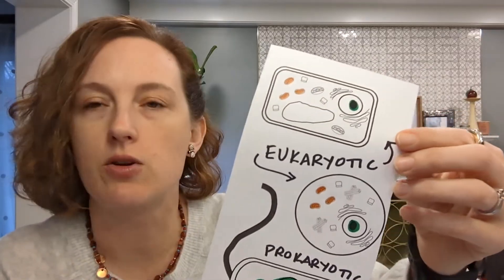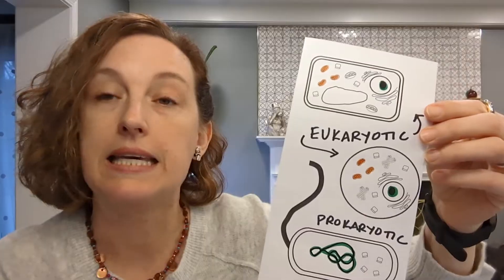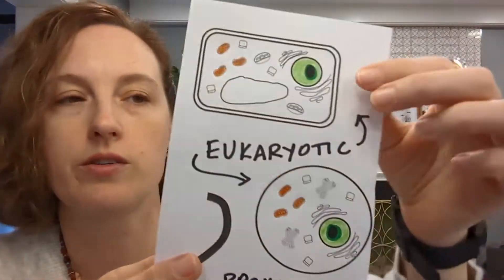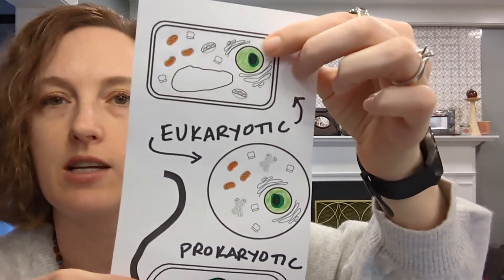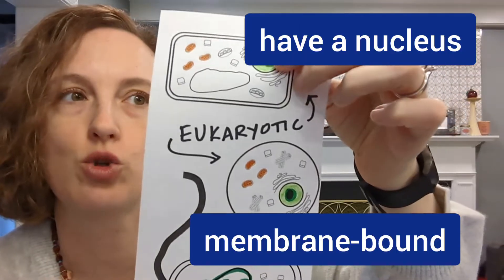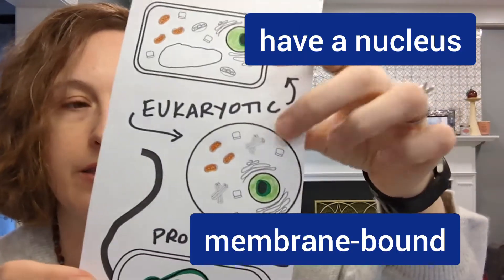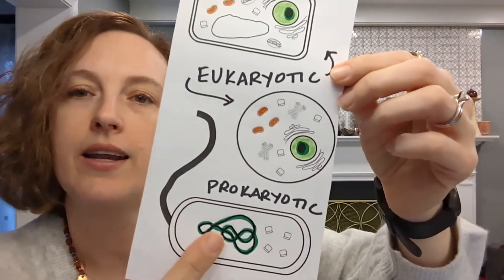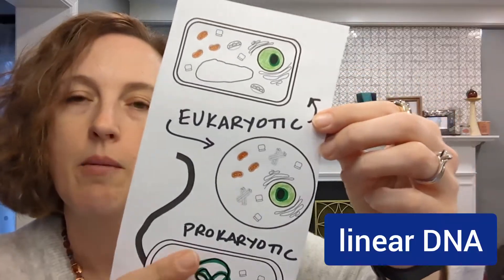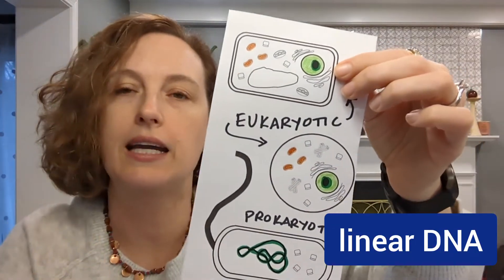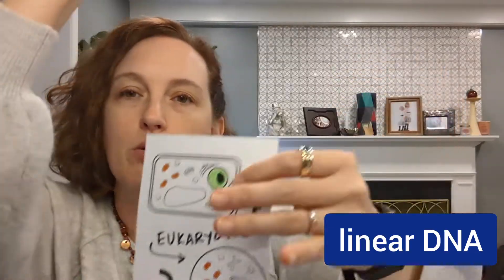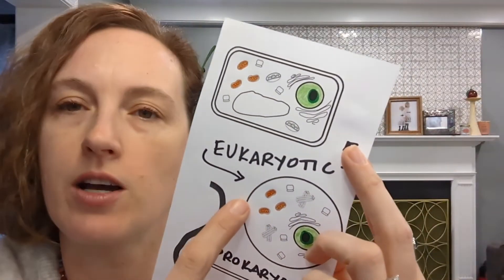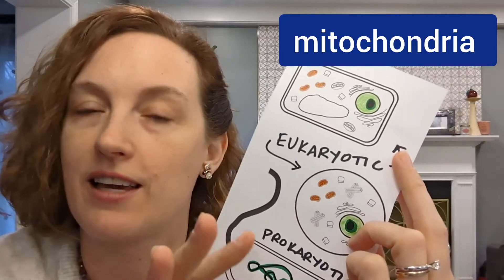It's not always true that they're multicellular — amoebas and yeast are examples of eukaryotic cells that are single-celled — but they're often multicellular. One of the most important things eukaryotic cells have that prokaryotic cells don't is a nucleus. The DNA in a eukaryotic cell is stored inside a nucleus which has a membrane. Another difference is that while prokaryotes have circular DNA, eukaryotic cells have linear DNA in chromosomes inside the nucleus — those chromosomes have ends, whereas in a prokaryotic cell there is no end, it's just a circle.